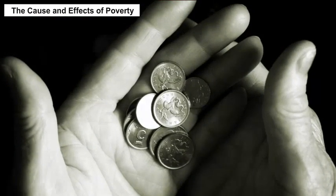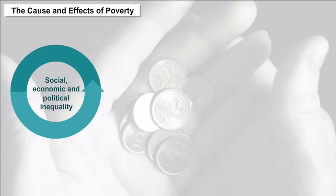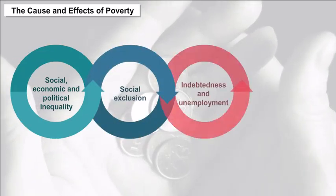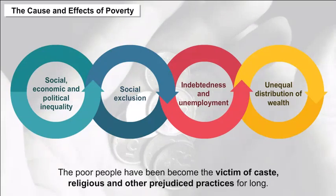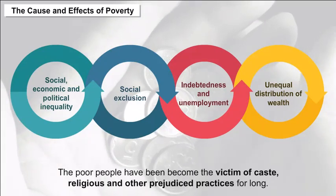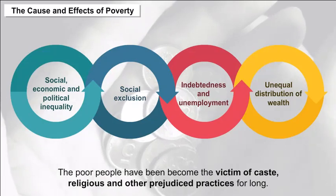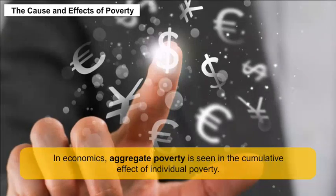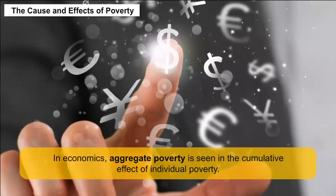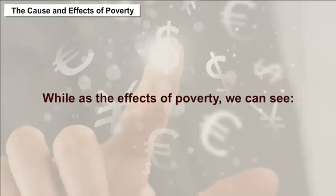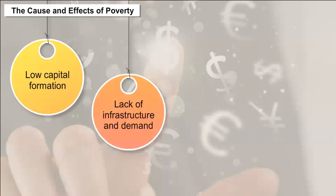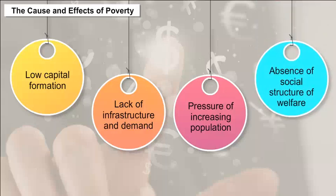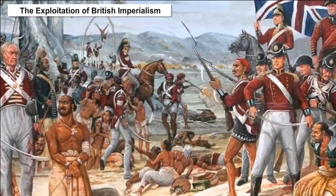For reasons of social, economic, and political inequality, social exclusion, indebtedness, unemployment, and unequal distribution of wealth, poor people have become victims of caste, religious, and other prejudiced practices for long. In economics, aggregate poverty is seen in the cumulative effect of individual poverty. The effects of poverty include low capital formation, lack of infrastructure and demand, pressure of increasing population, and absence of a social structure of welfare.